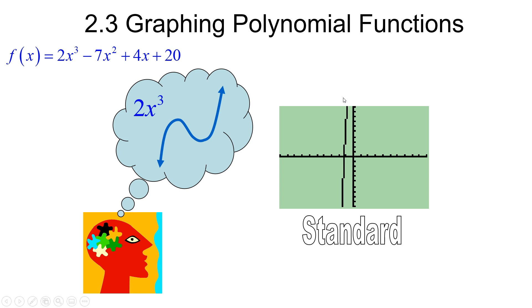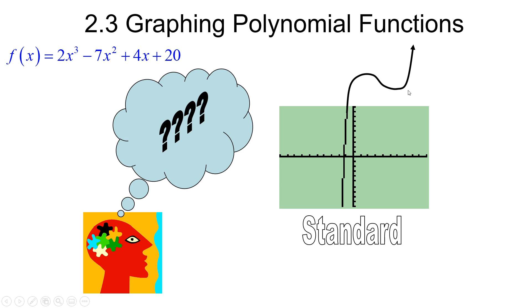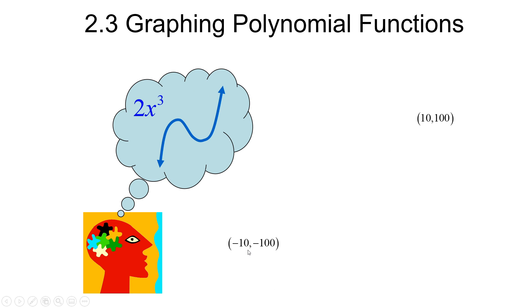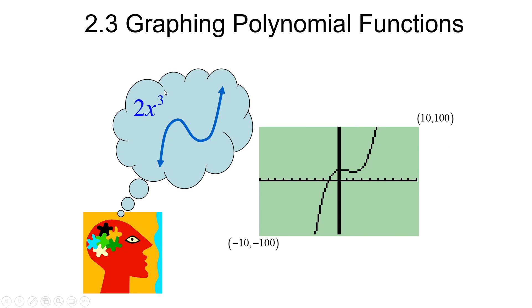We need to expand the window. It looks like if I expanded my y-interval I could probably see the whole graph, so it just becomes trial and error. Go to the window button and expand: leave x at -10 to 10, but change y to go from -100 to 100. With that new window, there's the graph — the general cubic shape we were expecting.